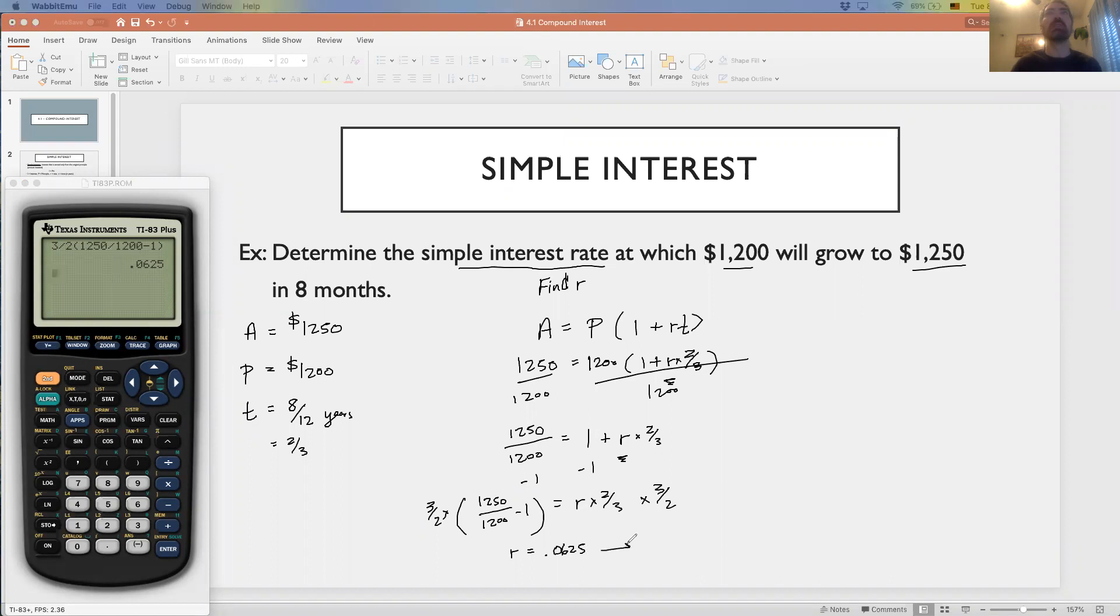Depending on the directions, they may want you to leave it as a decimal or write it as a percent. If we're putting that back in terms of a percent, you would multiply by 100 or move your decimal place to the right two spaces. 6.25% is the simple interest rate that you would need for $1,200 to grow to $1,250 over an eight-month period.